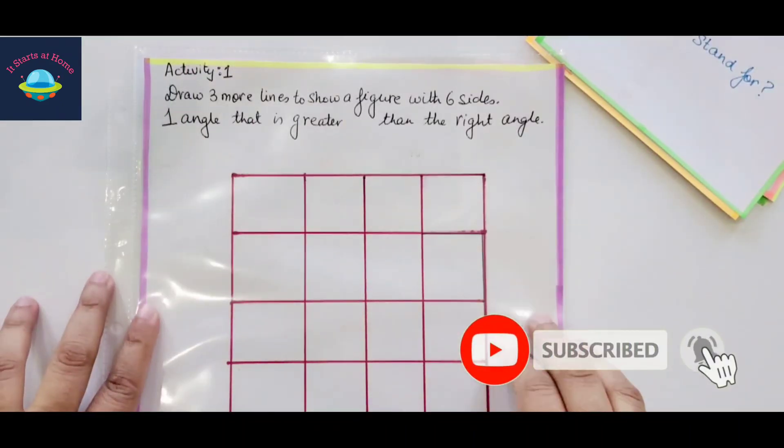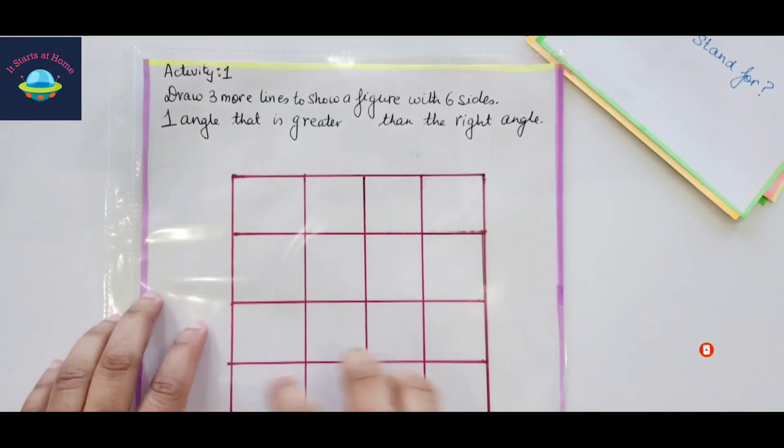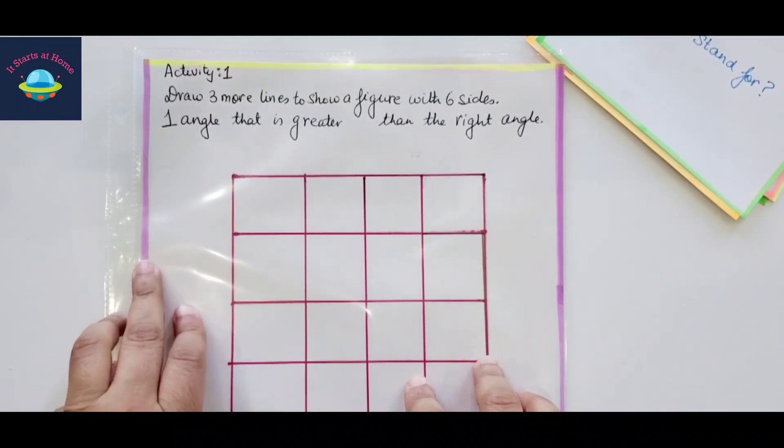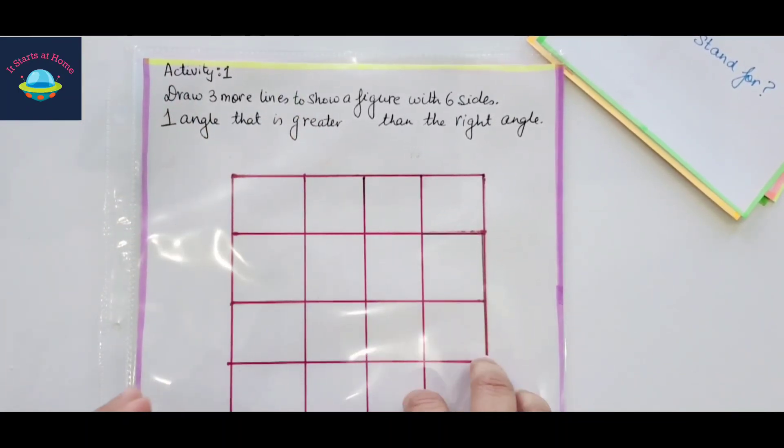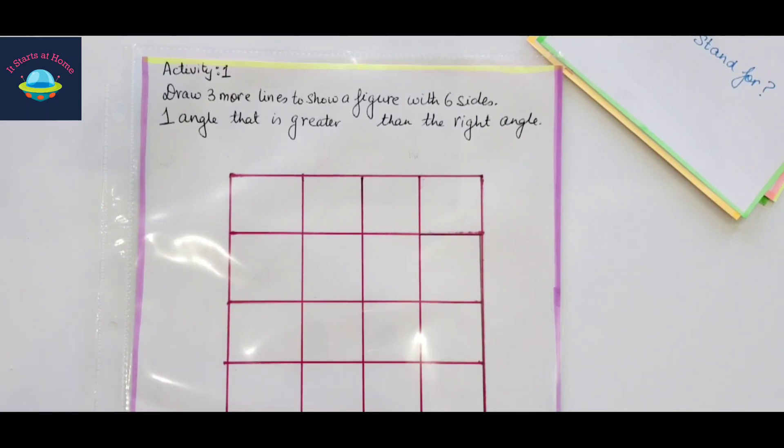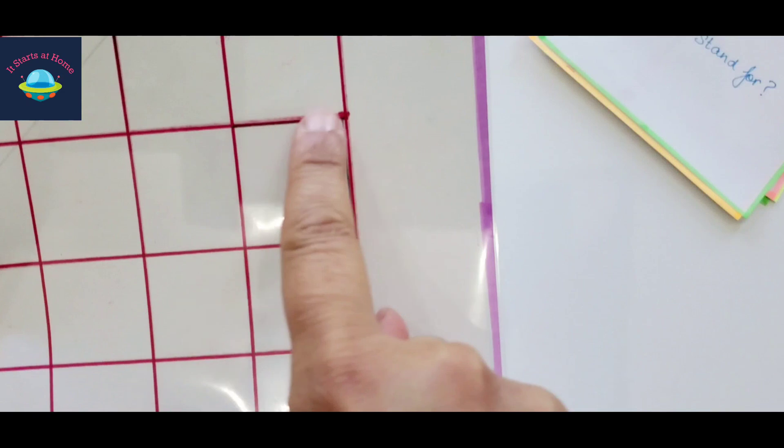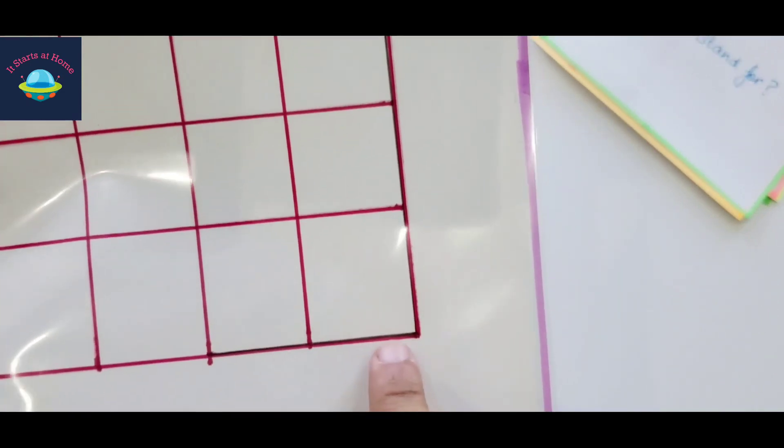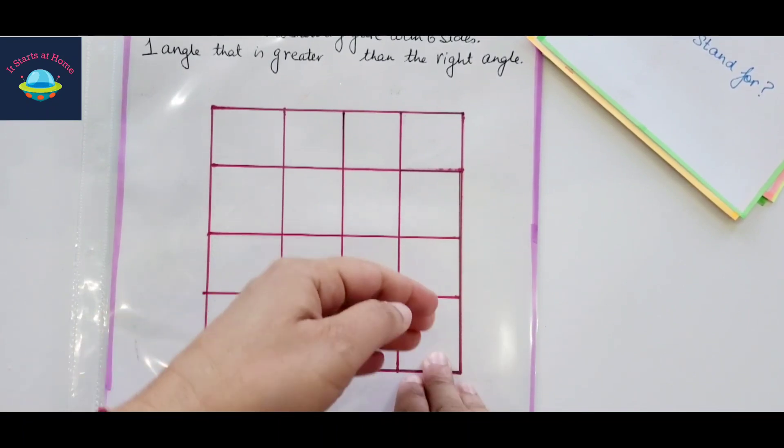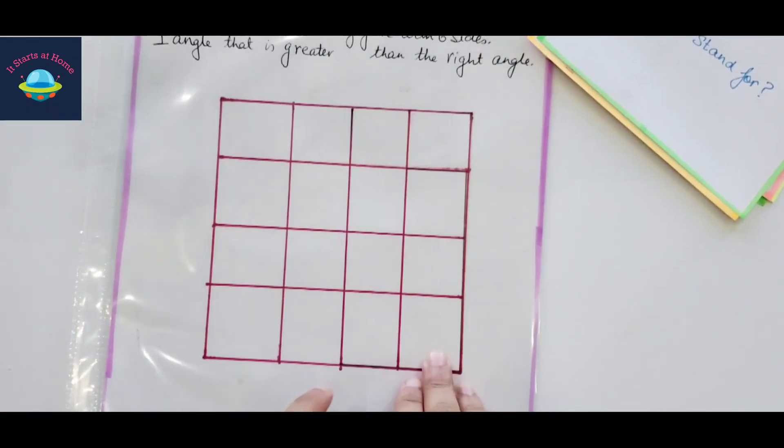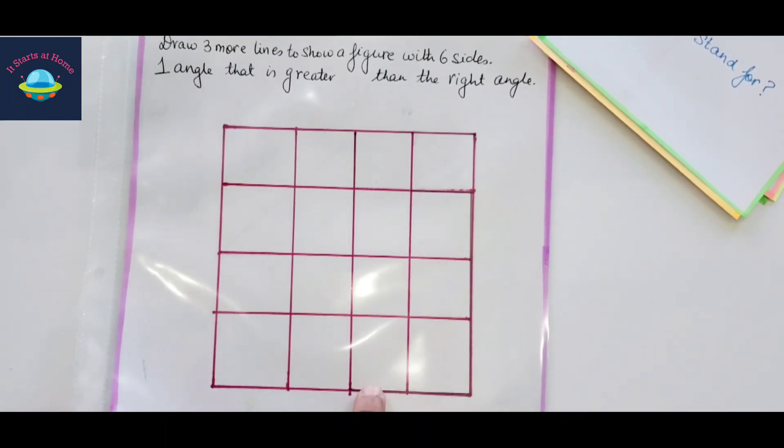The first activity I'm going to show you today is draw three more lines to show a figure. I've made a grid here, a 4x4 grid. Draw three more lines to show a figure with six sides and one angle that is greater than the right angle. I have drawn this shape right here and this is what they have to use as a base and make an extension to make it six sides and one angle that is greater than the right angle.